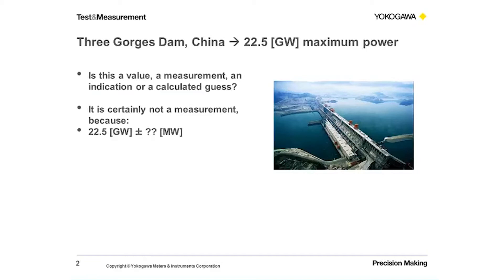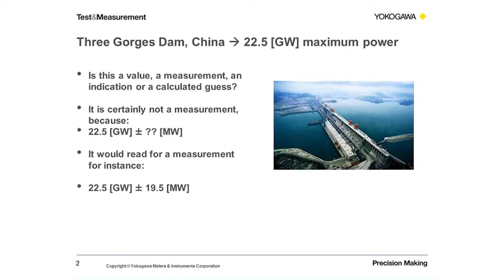If it was a measurement — which it certainly is not — it would read 22.5 gigawatt plus minus an uncertainty. For example, if we calculated using one of our power analyzers, we would read 22.5 gigawatt plus minus almost 20 megawatts. This uncertainty cannot be ignored because as energy generated from this dam is traded every day, somebody will have to account for the right loss for this uncertainty when trading the energy. So knowing the uncertainty is very important.